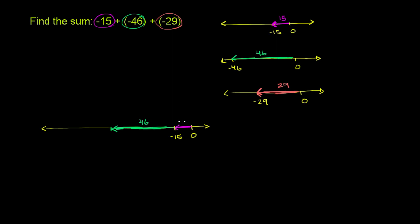We know the length of the magenta arrow is 15. Then finally we have the orange arrow, which has a length of 29 to the left. So when all is said and done, the total length we are to the left is going to be 15 plus 46 plus 29. But since it is all to the left, it is going to be negative.